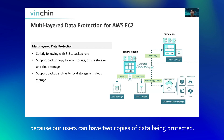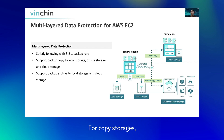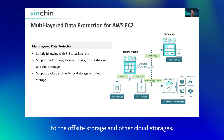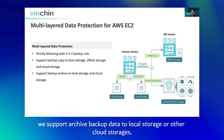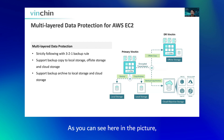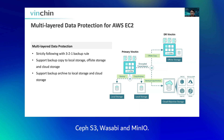Because our users can have two copies of data being protected. For copy storages, we support backup data to local storage, off-site storage, and other cloud storages. For archive storages, we support archiving backup data to local storages or other cloud storages. As shown in the picture, other cloud storages include Microsoft Azure Blob, CFS3, Wasabi, Min.io, and of course AWS Cloud is supported as well.